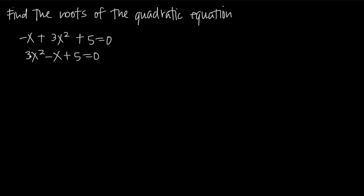From here we can see that we have just a regular trinomial, and we want to see if we can factor this into two binomials. But there's no combination of the factors 3 and 1 and 5 and 1 that will get us to negative 1, so we can't factor this as usual.